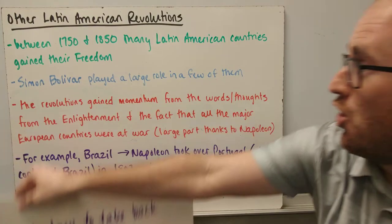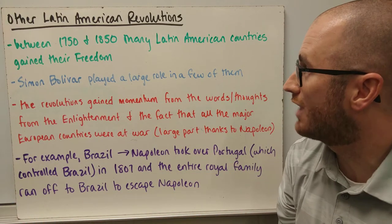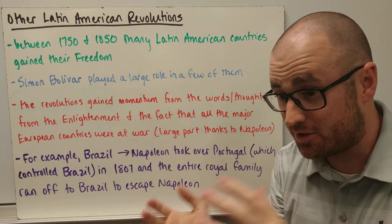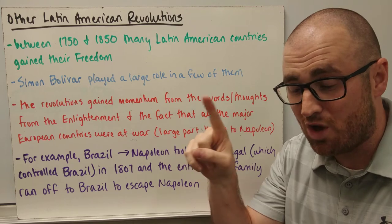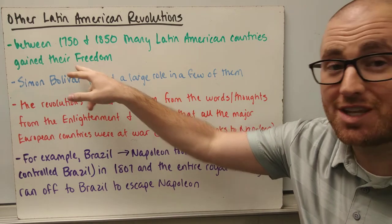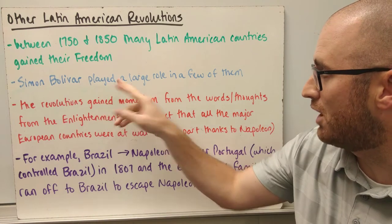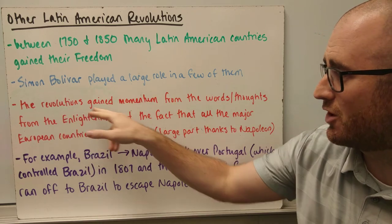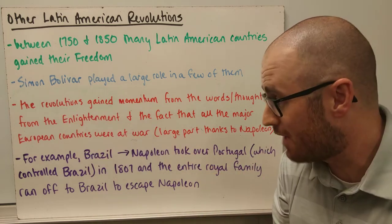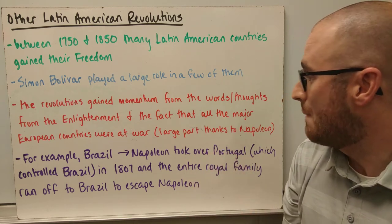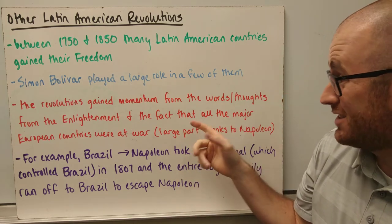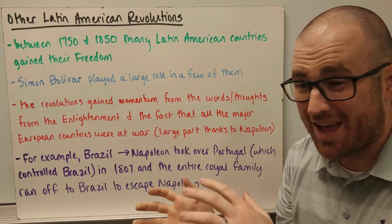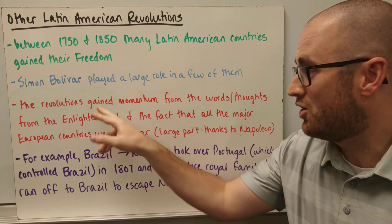Between 1750 and 1850, many Latin American countries that had been under Spain, France, or Portugal gained independence. Simón Bolívar played a large role in many of those efforts. The revolutions across Latin America gained momentum from the ideas of the Enlightenment, and from awareness of revolutions happening worldwide. With Napoleon in power, the major European countries were fighting each other and were less focused on their colonies in Latin America, which fueled the revolutionary momentum.